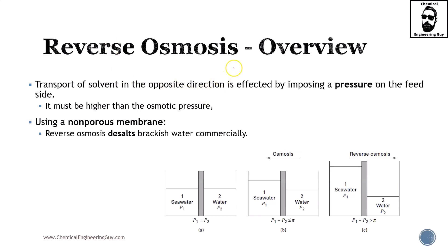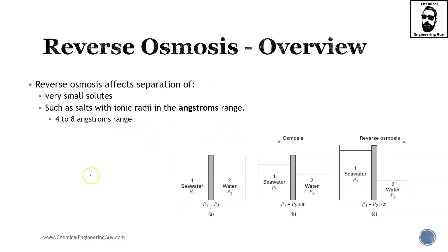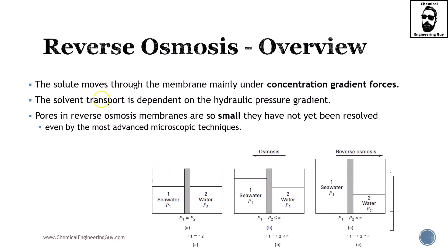Transport of solvent in the opposite direction is effected by imposing a pressure on the feed. It must be higher than the osmotic pressure — if the pressure is not high enough, you will not be able to reverse this process. Using a non-porous membrane, reverse osmosis can desalinate brackish water commercially. RO affects separation of very small solids such as salts with ionic radii smaller than even the range of sodium — 4 to 8 angstroms.